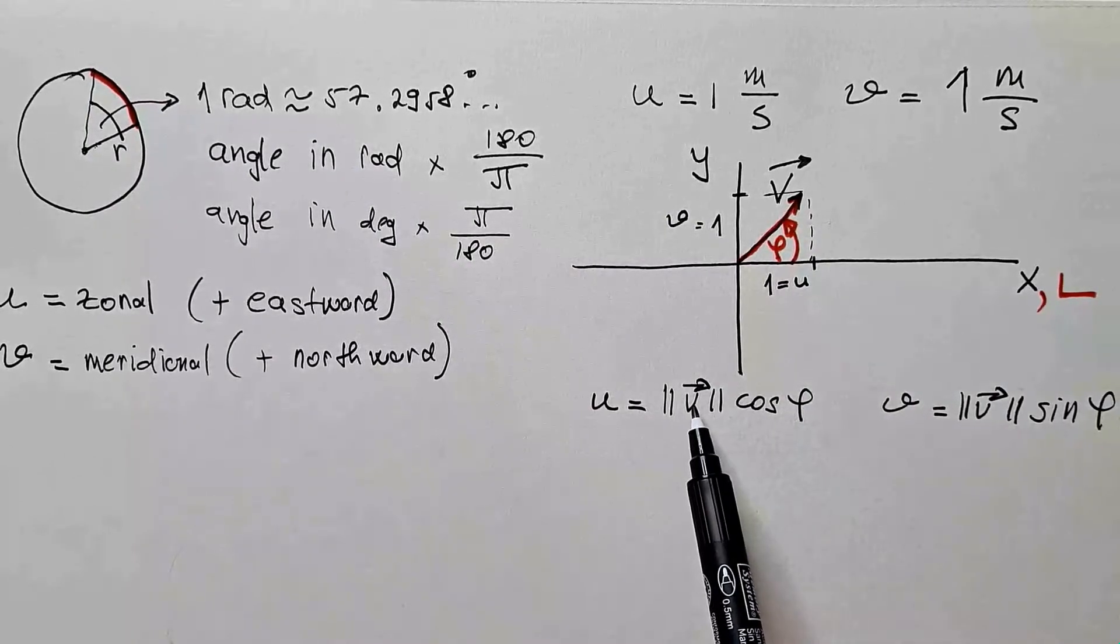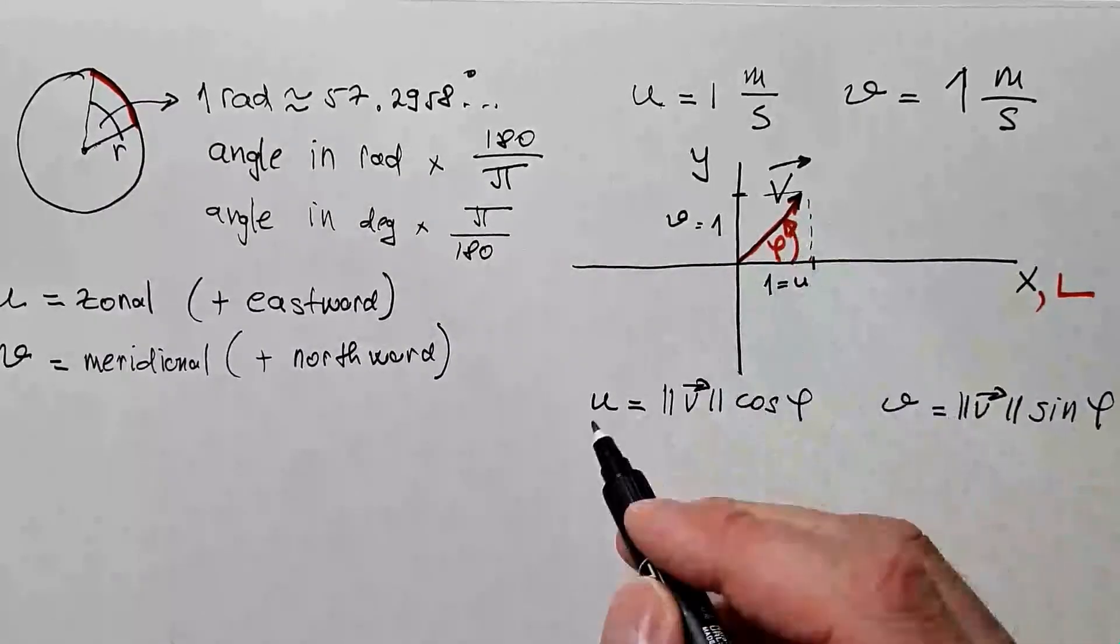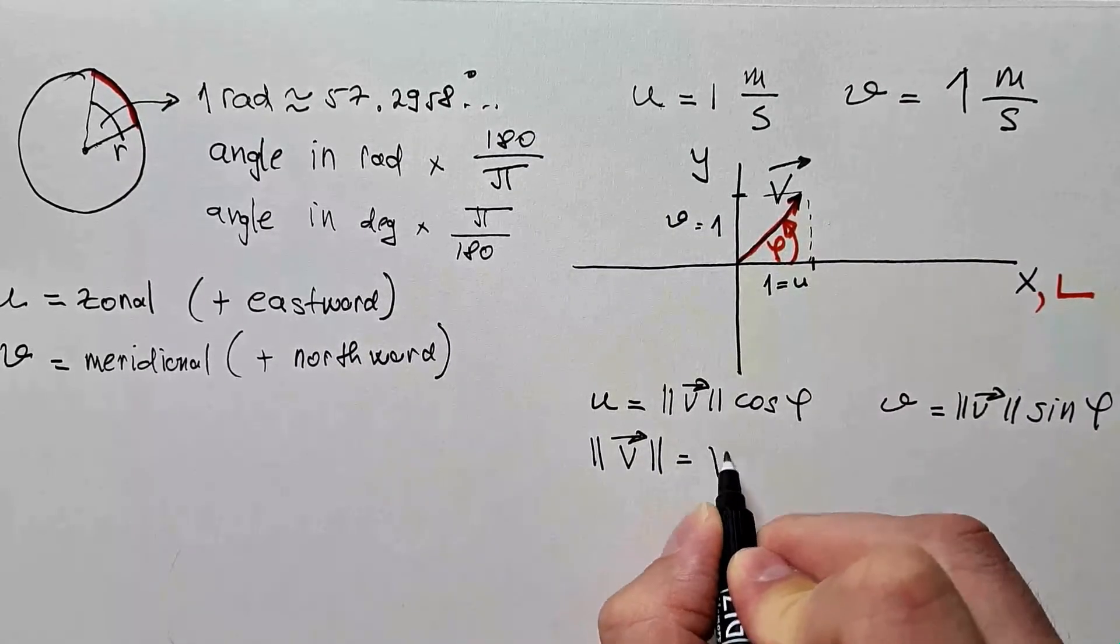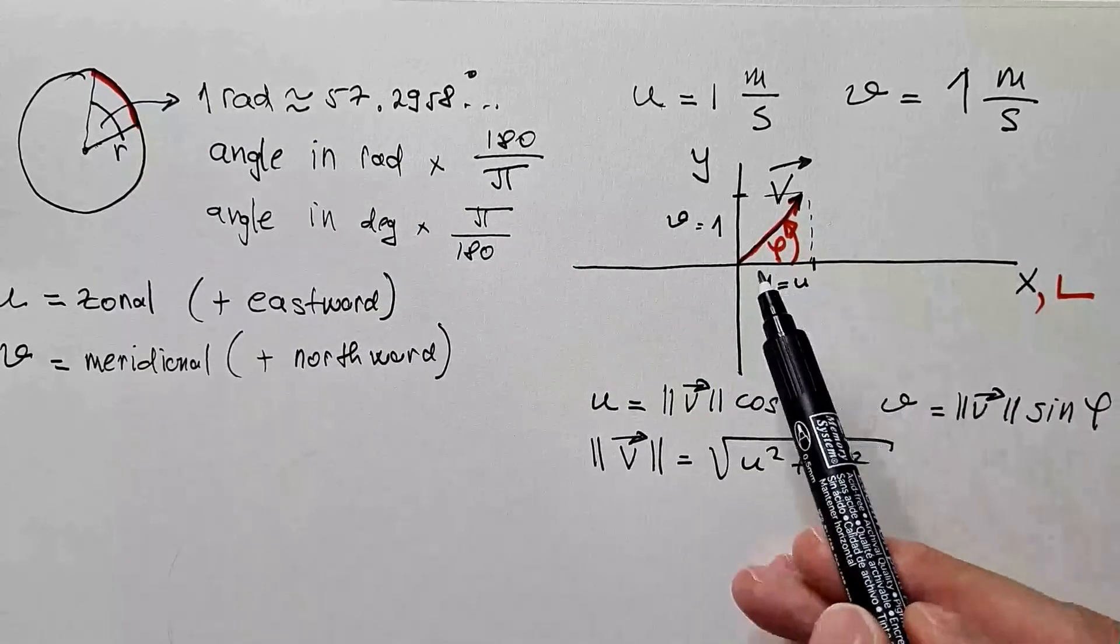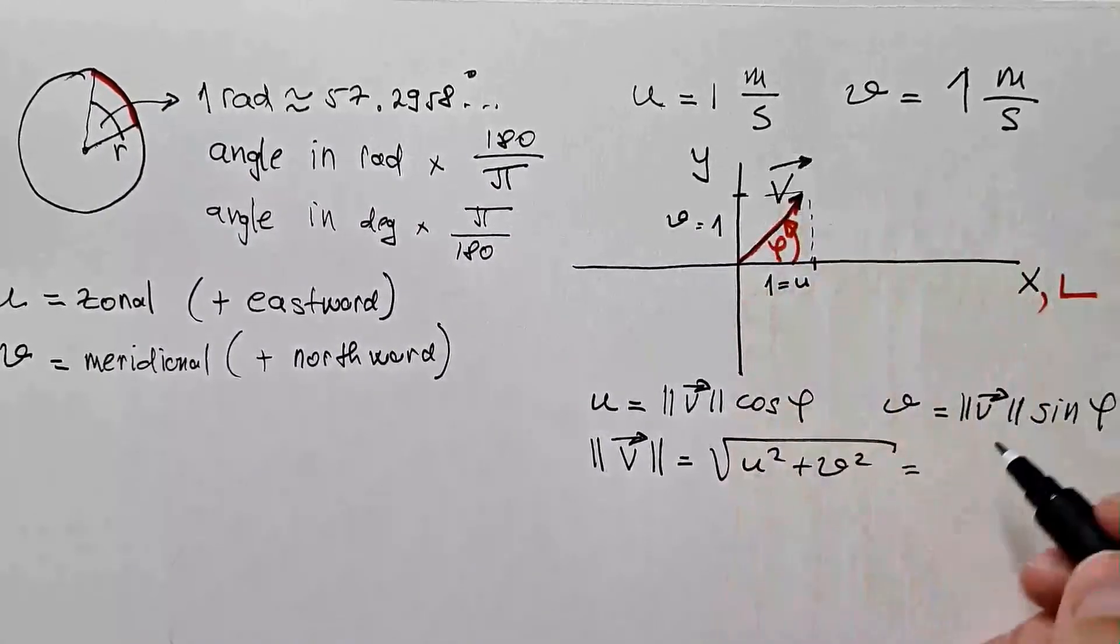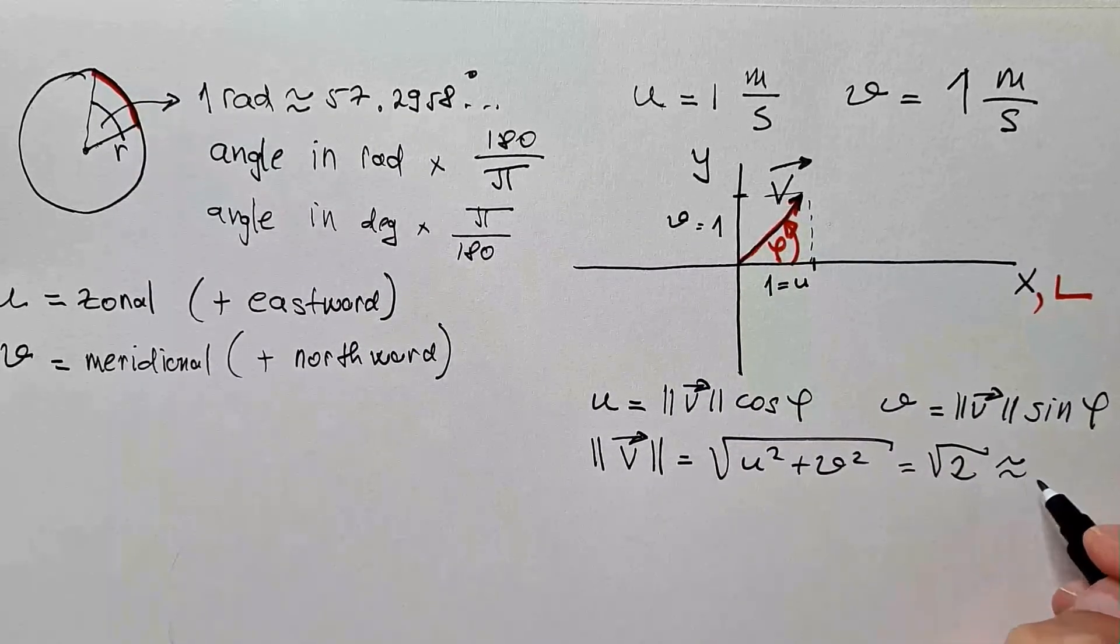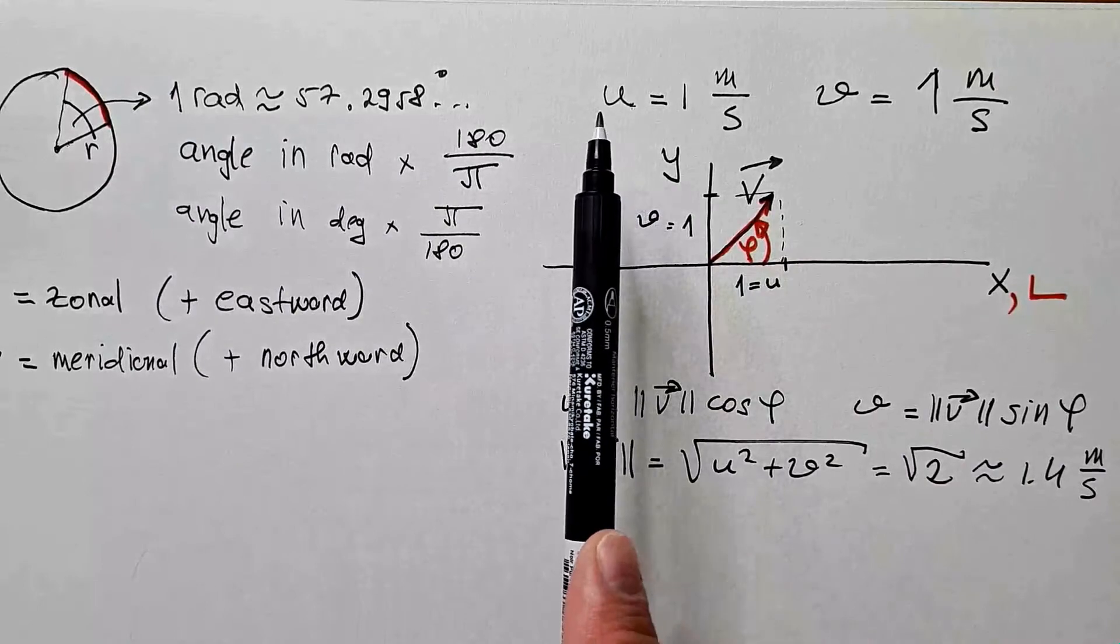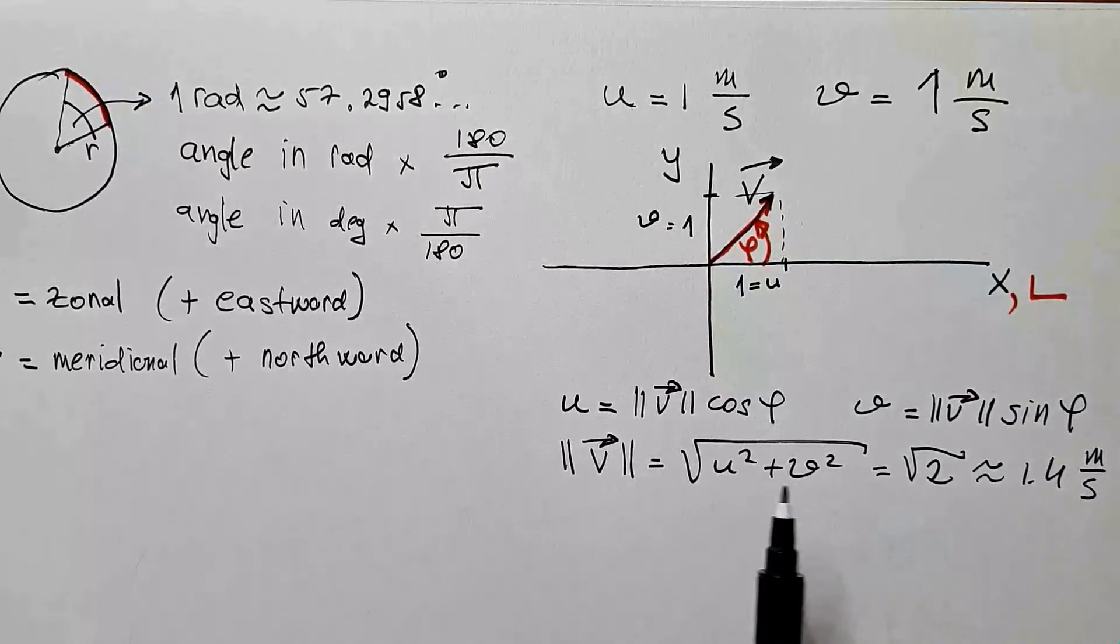However, in this case, we are not given phi and V, we are given U and small V. So if we want to find magnitude, you know that magnitude would be square root of U squared plus V squared. And you can see that from this graph, Pythagoras theorem. And if you plug in these numbers over here, you will see that intensity is square root of 2, which is approximately 1.4 m per second. Well, that was easy. So we conclude, if we know U and V components, it is quite easy to find the magnitude of the wind. Just Pythagoras theorem.